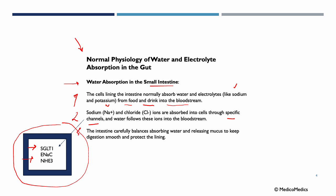The intestine carefully balances absorbing water and releasing mucus to keep digestion smooth and protect the lining. It is key to understand normal physiology because cholera itself disrupts the gut's balance of water and electrolyte absorption.